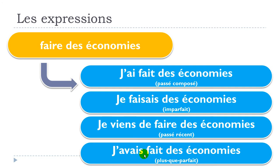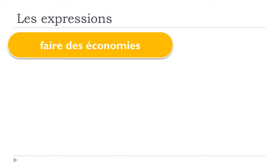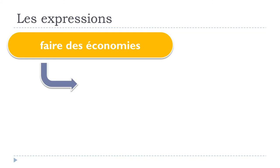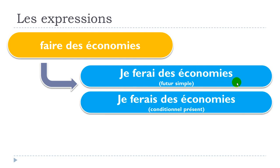One more time: j'ai fait des économies, je faisais des économies, je viens de faire des économies, j'avais fait des économies. Now let's see a few other tenses. Le futur simple: je ferai des économies. Le conditionnel présent: je ferais des économies.